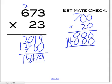So 0 plus 0 equals 0, 0 plus 0 equals 0, 0 plus 0 equals 0, then you bring the 4 down and bring the 1 down. So you get 14,000 as your estimate, and it's pretty close to 15,479, so you know your answer is right.